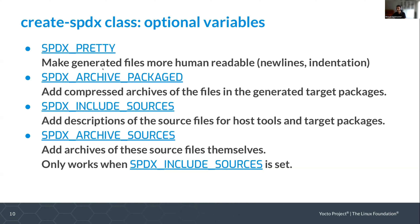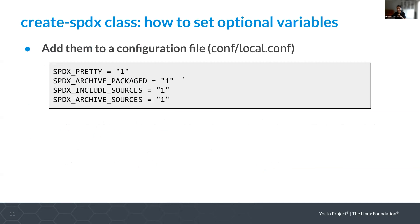If you want to check the individual descriptions of each variable, just click on the links and you'll end up in the Yocto project manual variable reference with all the variables described. To use these options, just edit your configuration file and set the ones you want to 1 — that's it.